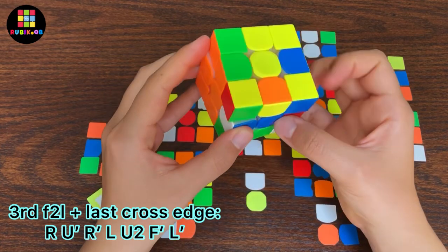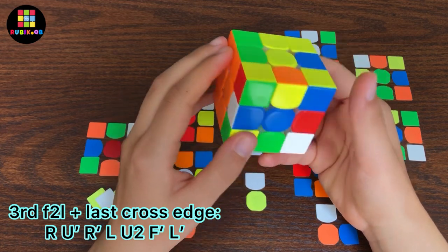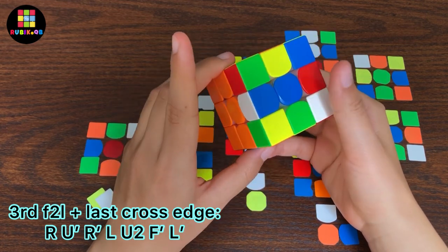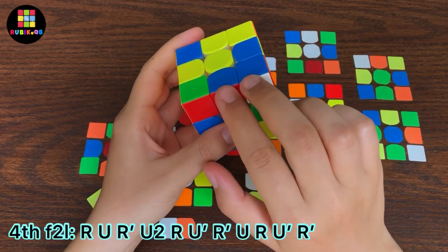But before doing L prime and finishing this one, he solved the edge by doing F prime, then L prime, and finally the last F2L pair.